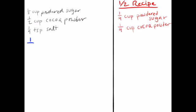So let's try multiplying one-fourth by one-half to get the amount of salt that we're going to use in our new recipe. First, we're going to do the exact same thing. We're going to multiply the numbers on the top. That's just one times one, which is one.